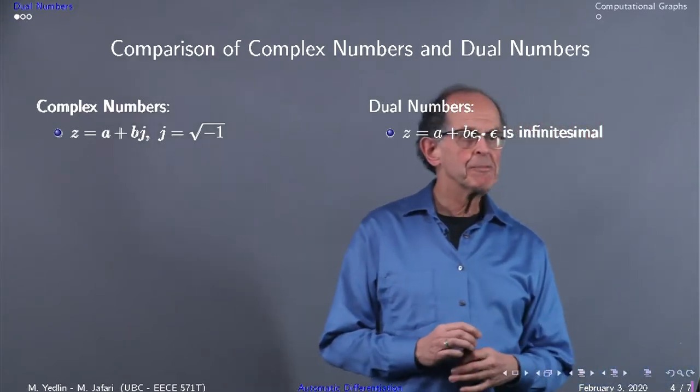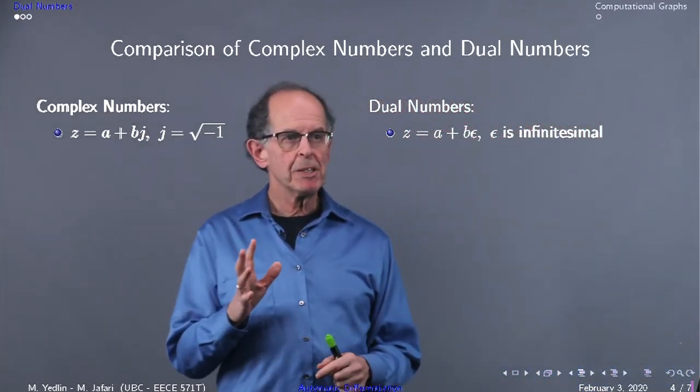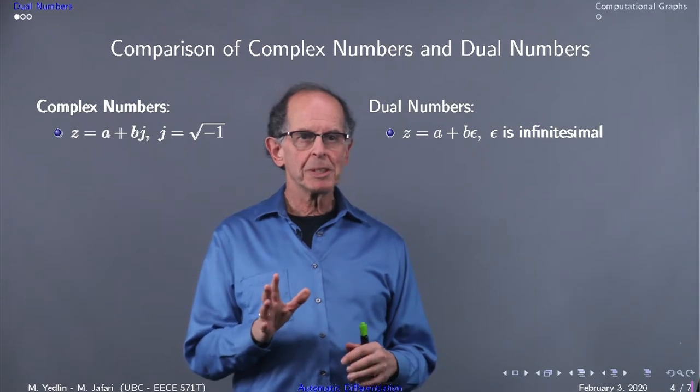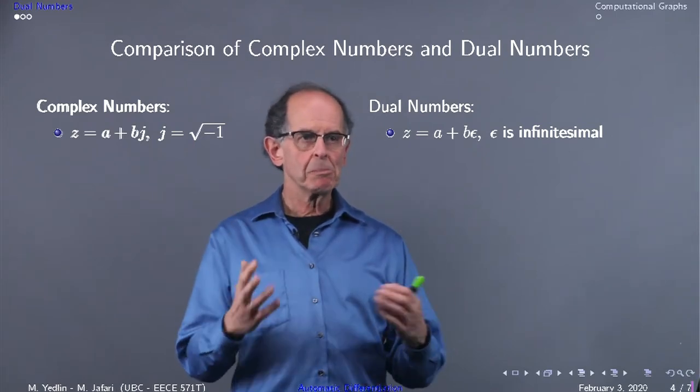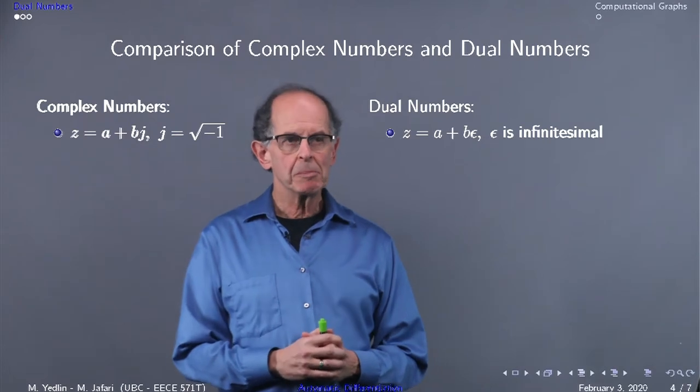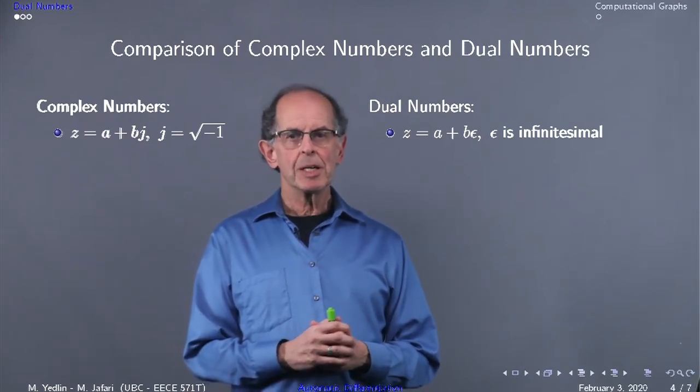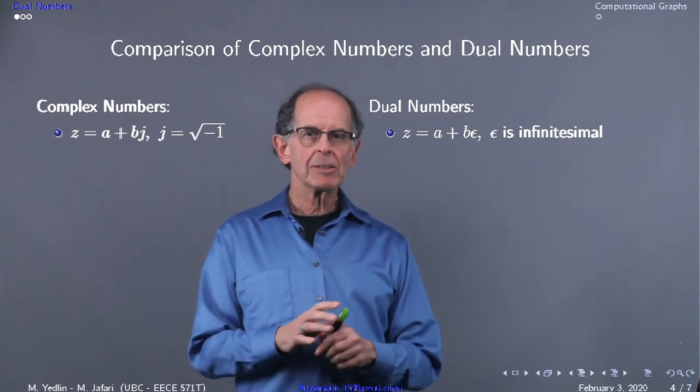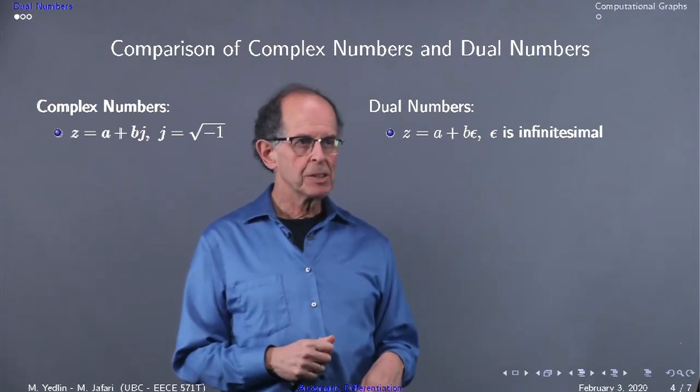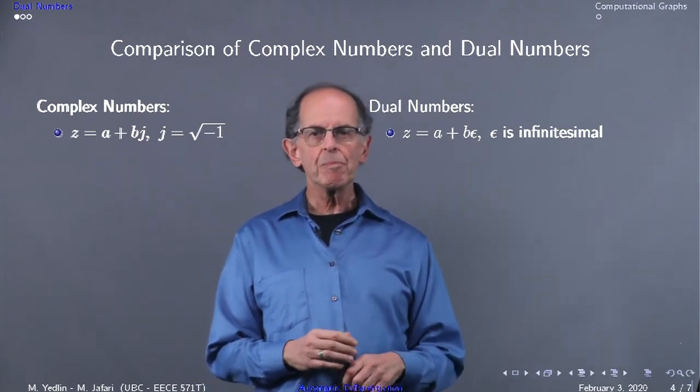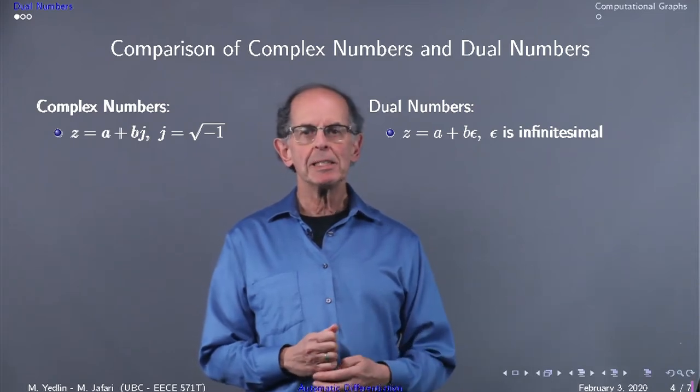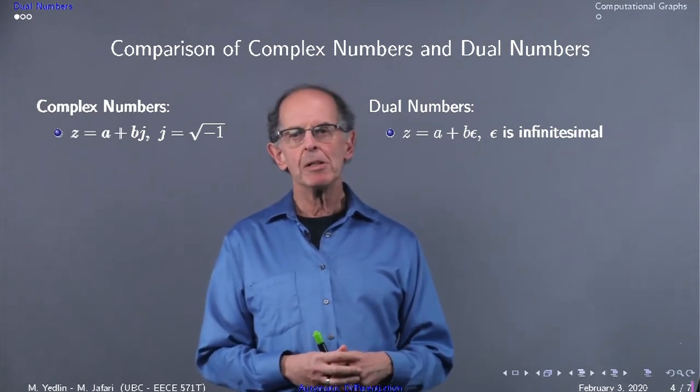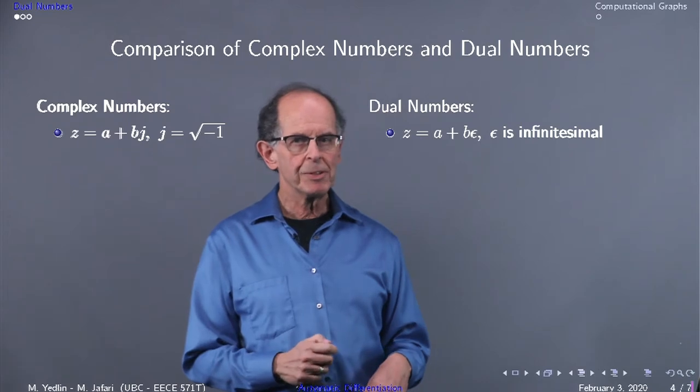First, the definition. To get a feel for dual numbers, we'll compare with complex numbers. In complex numbers, z equals a plus bj, where j is the square root of minus one and represents a rotation of 90 degrees. For dual numbers, z equals a plus b epsilon, where epsilon is infinitesimal.